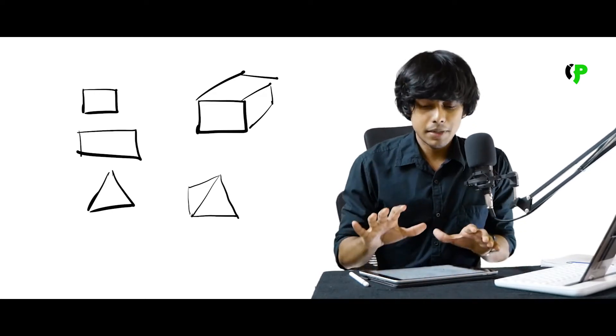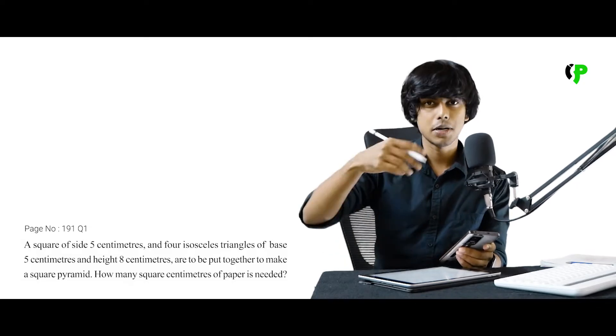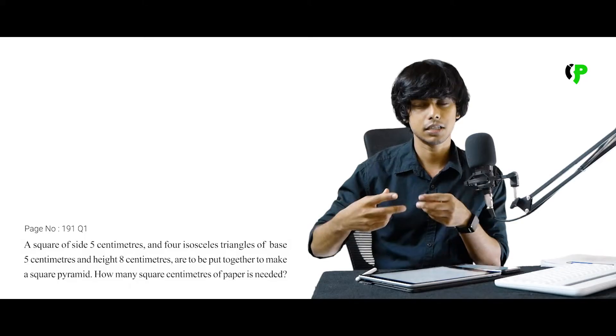Let's discuss the first question on page 191. A square of side 5 cm and 4 isosceles triangles of base 5 cm and height 8 cm are put together to make a square pyramid. How many square centimeters of paper is needed? We have paper cuttings in a pyramid shape.